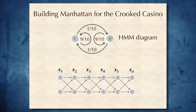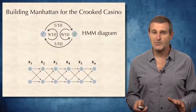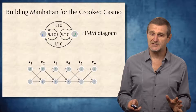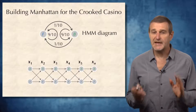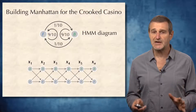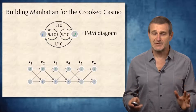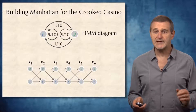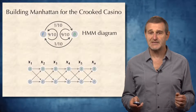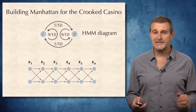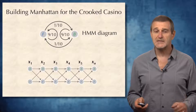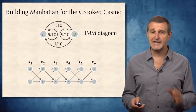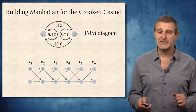To solve the decoding problem, we will try to build a Manhattan graph in such a way that every path in this graph will correspond to a hidden path in the HMM, and vice versa. Every hidden path in the HMM will correspond to a path in the built Manhattan. For the coin flipping HMM, we will construct a Manhattan consisting of two rows and N columns, where N is the number of emitted symbols.